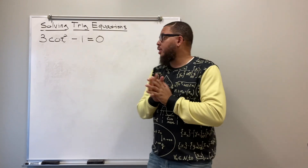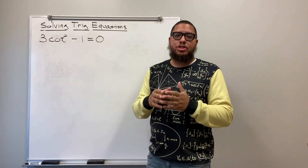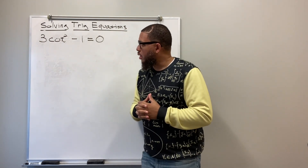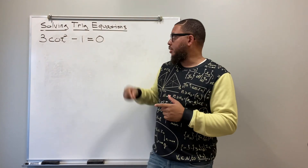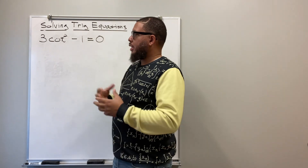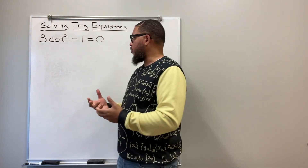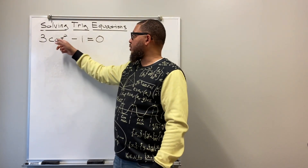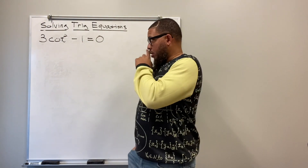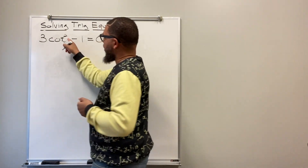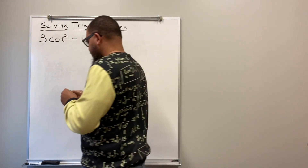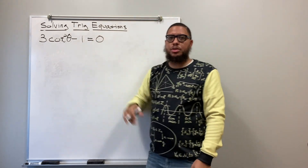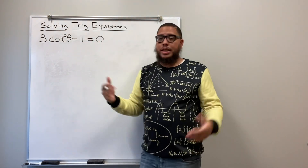Welcome back to All This Math. This is Professor Parker, and for this lesson we're going to be solving a trigonometric equation. So let's take a look at what we have: three cotangent squared — I forgot to write the argument, which is the angle we're solving for. The Greek letter theta. So we have three cotangent squared of theta minus one is equal to zero.